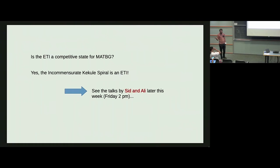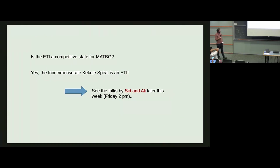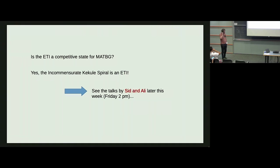The important remaining question is whether the ETI is a state that actually appears as a ground state of a realistic Hamiltonian, or is relevant to experiments. We claim yes—as Sid will explain on Friday, the IKS (incommensurate Kekulé spiral) state, believed to have been observed in both TBG and TTG, is exactly such an ETI.